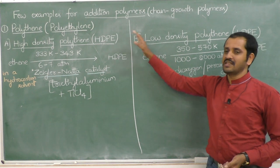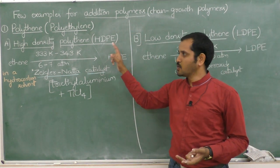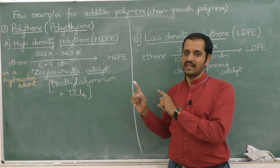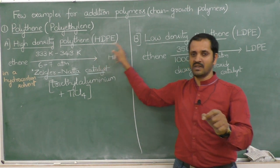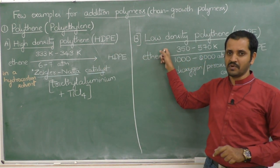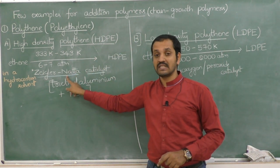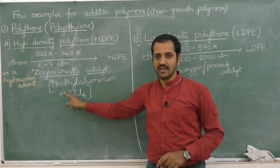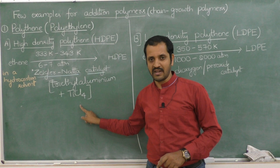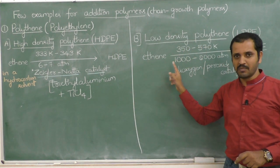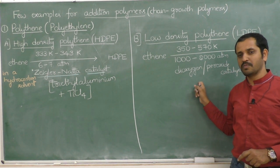To summarize polythene: it is obtained by the polymerization of ethene and exists as two types — HDPE and LDPE. HDPE is a linear polymer prepared using Ziegler-Natta catalyst (a mixture of triethyl aluminium and titanium tetrachloride), while LDPE is a branched chain polymer prepared using dioxygen or peroxide catalyst.